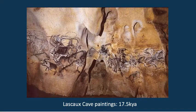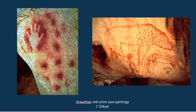In the Magdalenian, we start to see even more complexity to the tools and we start to see cave paintings. The Lascaux cave paintings are from a cave in France, dating to about 17,000 years ago — really beautiful, complex paintings on the walls of these caves. We start to see art objects appearing around this time.